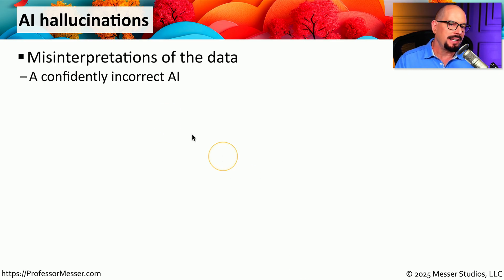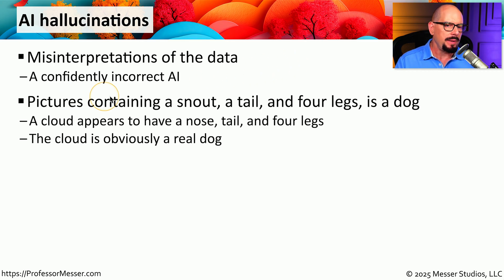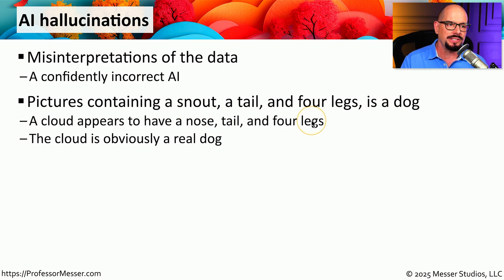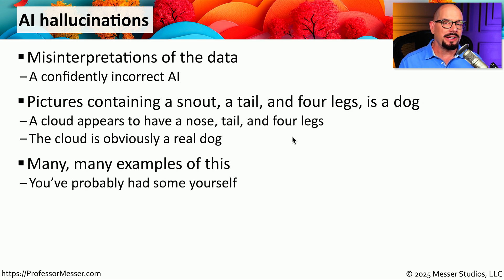There are also occasions where AI can completely misrepresent the data that it was provided — you can think of this as a confidently incorrect AI where it really seems to know the answer but the answer is completely wrong. For example, let's say we've told the AI that any picture containing a snout, a tail, and four legs is a dog. Then we provide the AI with a picture of a cloud, and the cloud appears to have a nose, a tail, and four legs — therefore the cloud is obviously a real dog. This is a simplified way to describe an AI hallucination, and these are not very unusual to find.